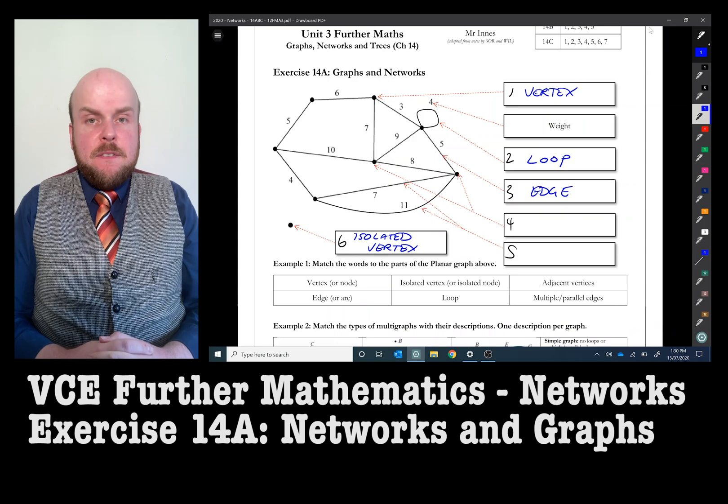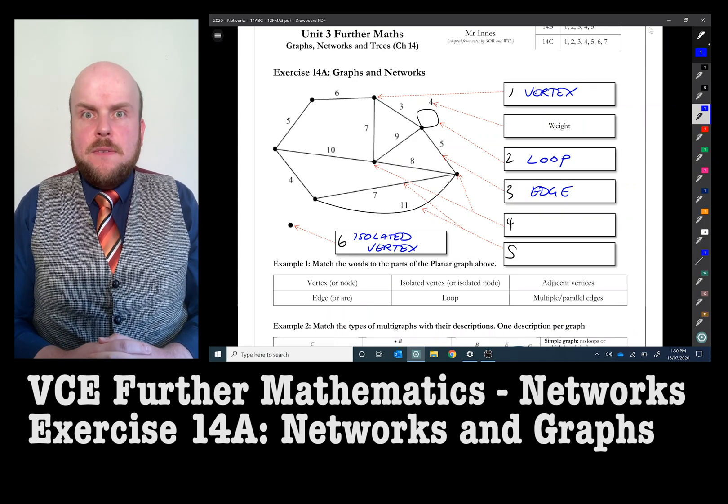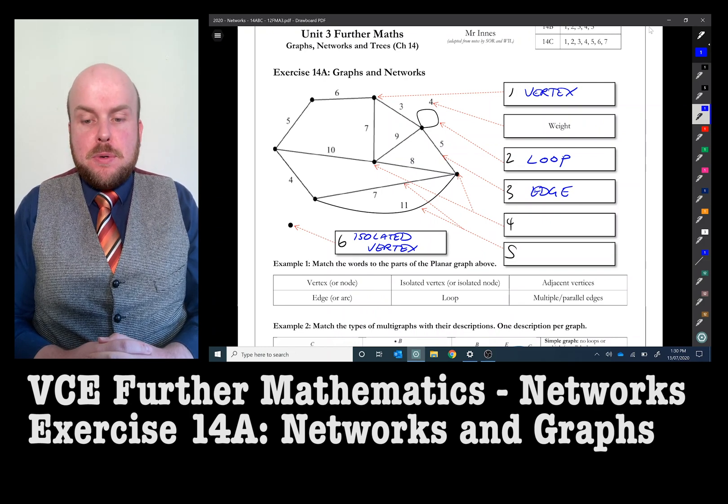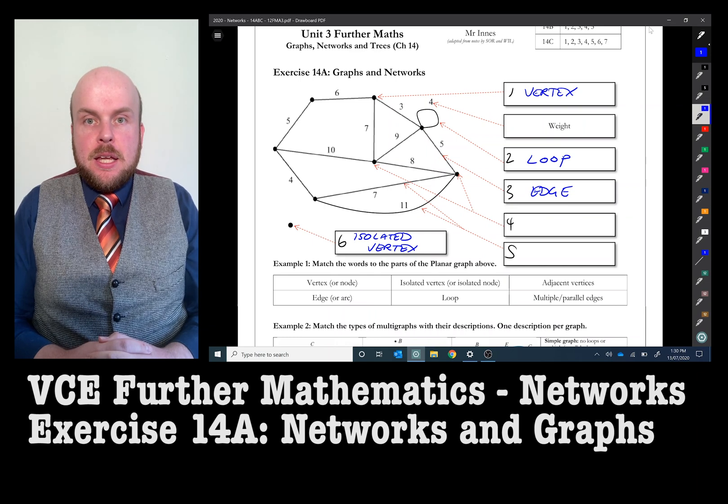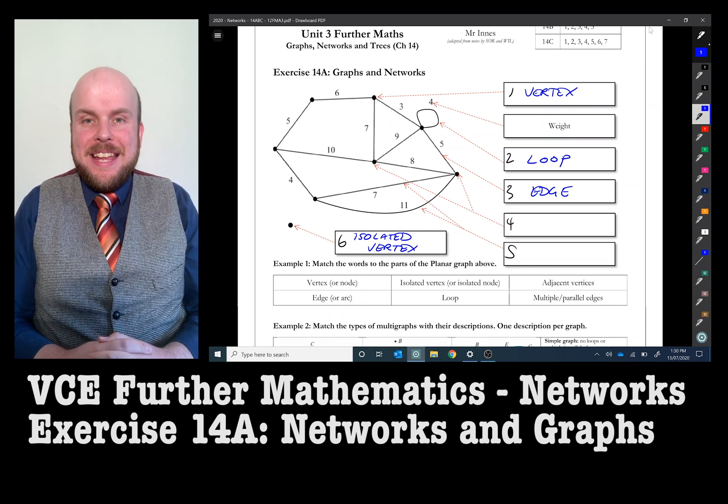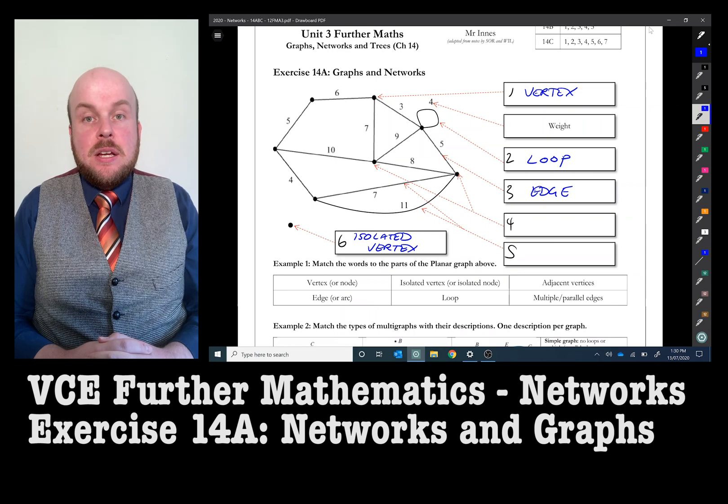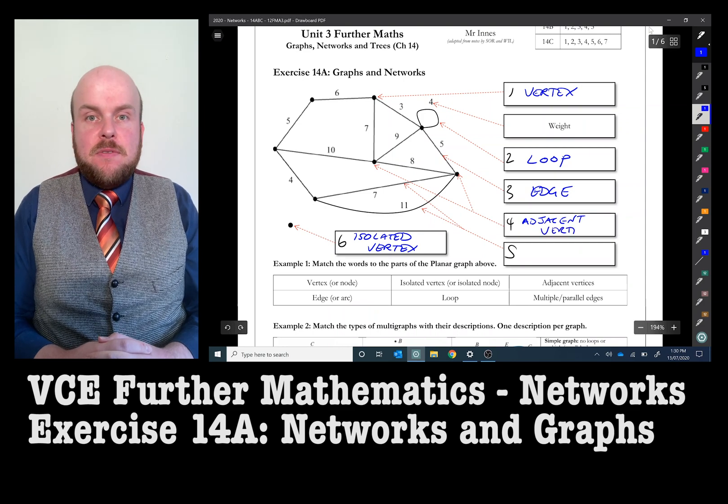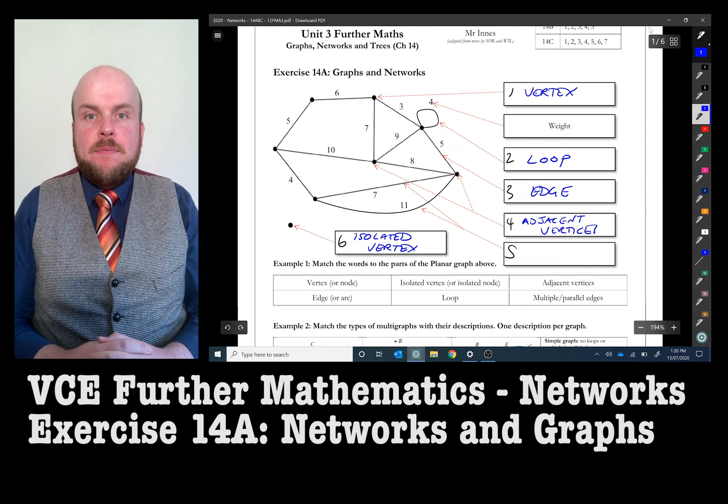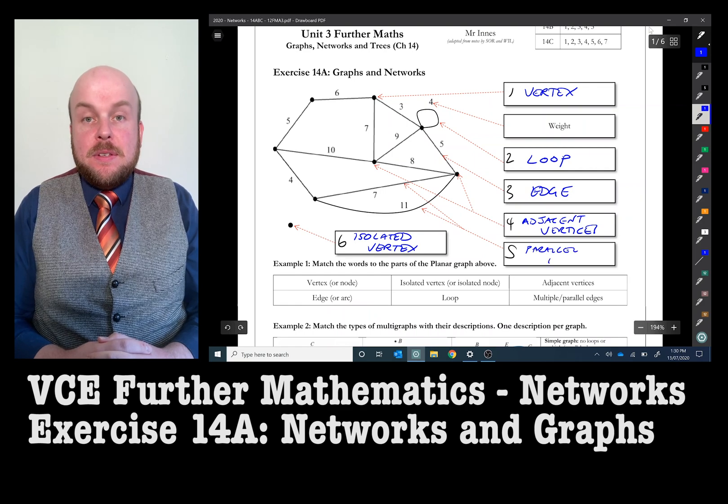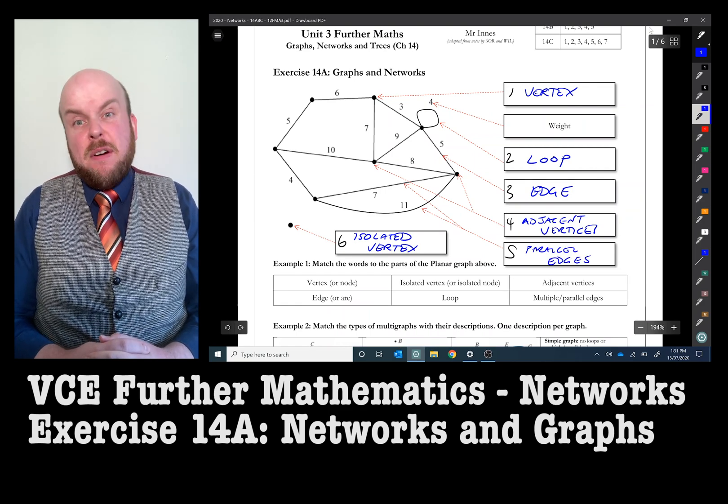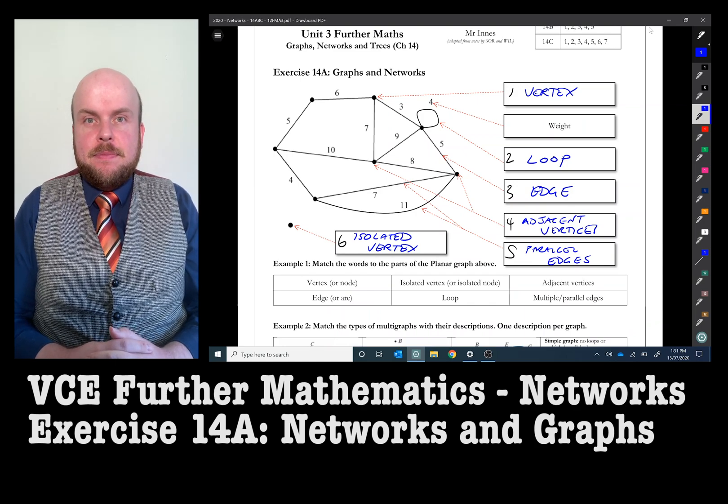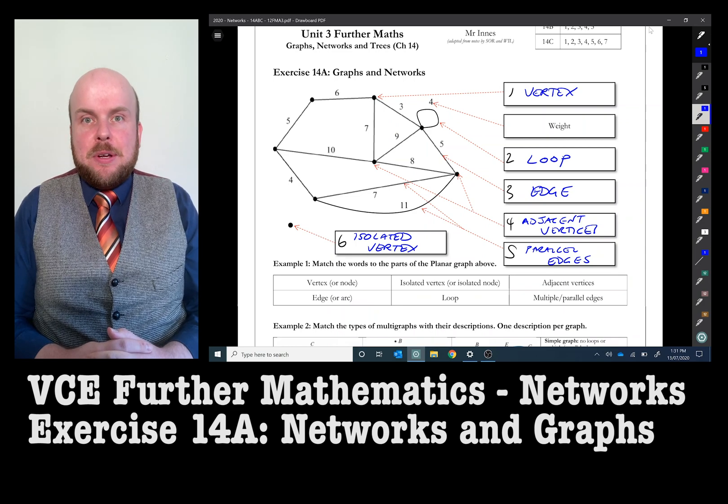If I'm referring to the two dots or two vertices that are attached to the same edge, they are referred to as adjacent vertices. If I'm referring to two edges that are connected to the same vertices, so in other words they are two parallel lines from the same dots, that is referred to as parallel edges. Sometimes referred to as multiple edges, however I prefer the word parallel because it seems a lot less confusing that way. Those are the aspects that make up a network graph.